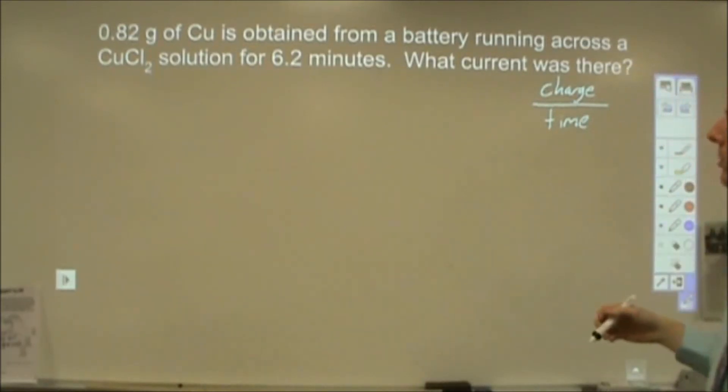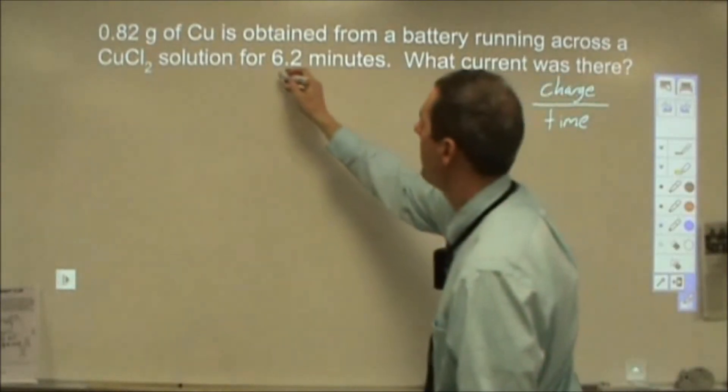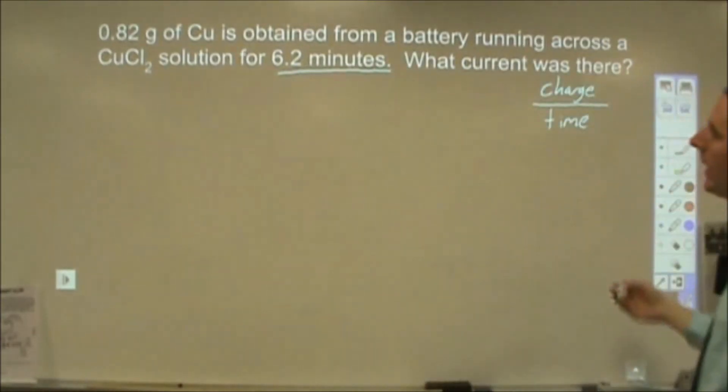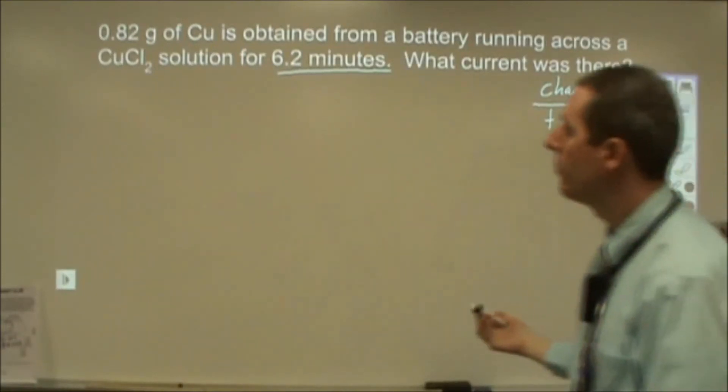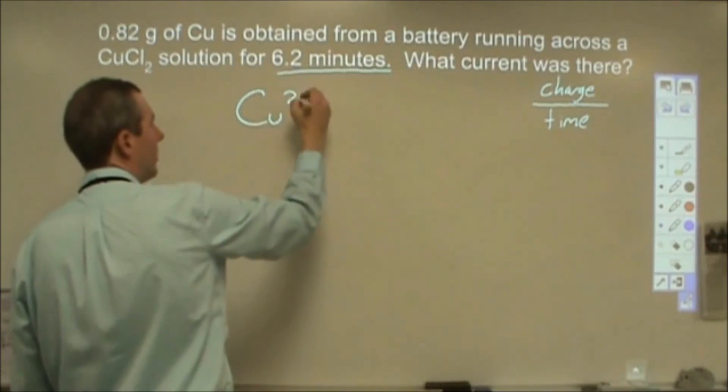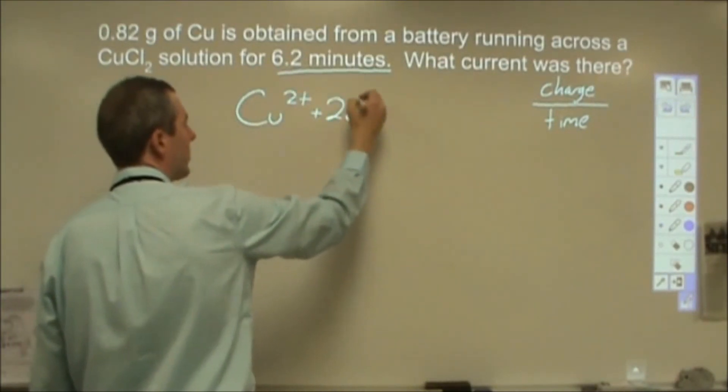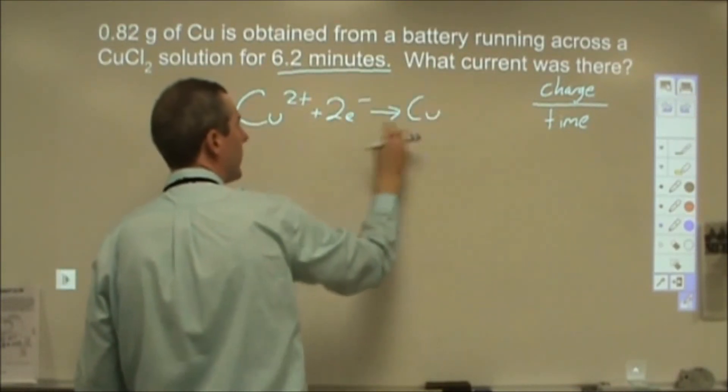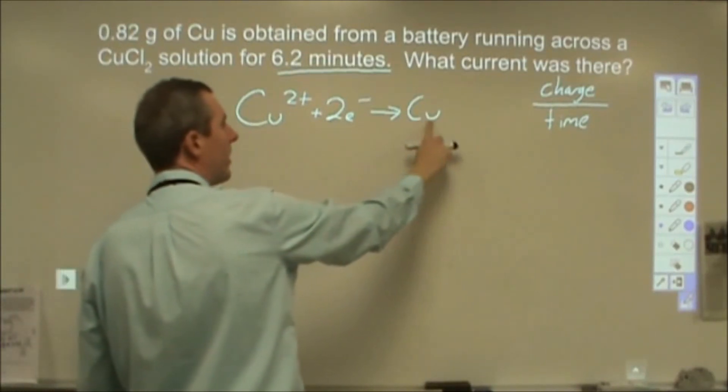So we need those two values to be able to figure this out. We have our time. It's just a minute, so we're going to have to change that into seconds. But aside from that, we really need to figure out how much charge is involved in creating 0.82 grams of copper. Now again, we want to start with the reaction. Copper 2 plus plus two electrons turns into copper metal. So we get the ratio that there are two of these necessary to make one of those.